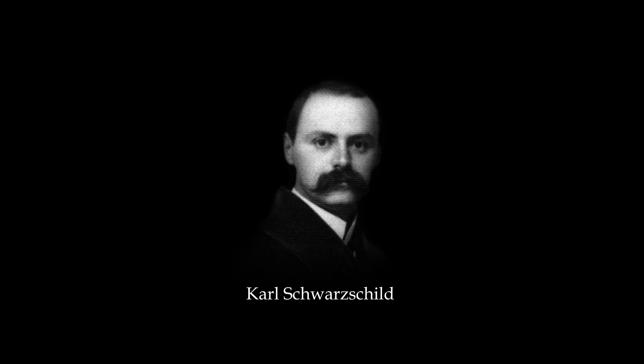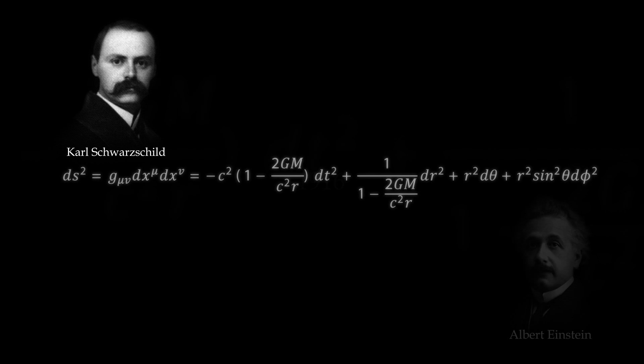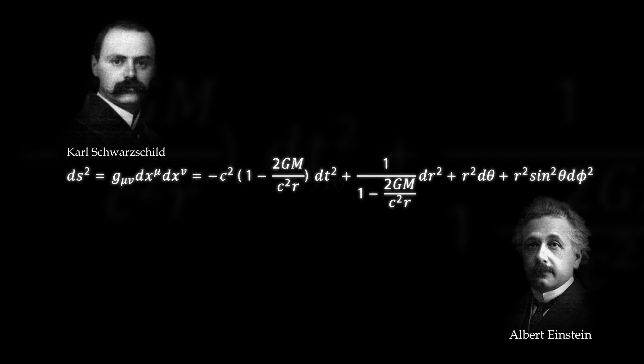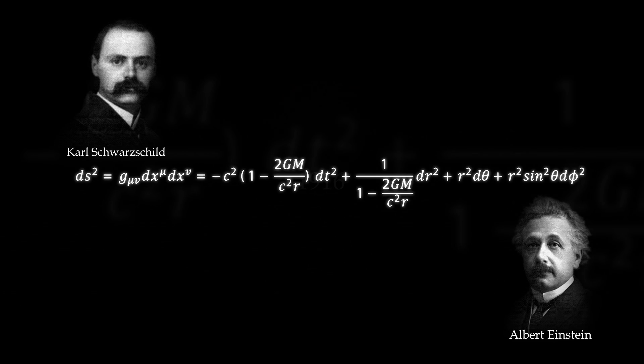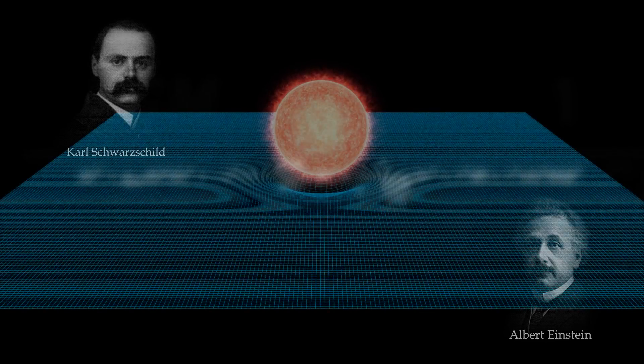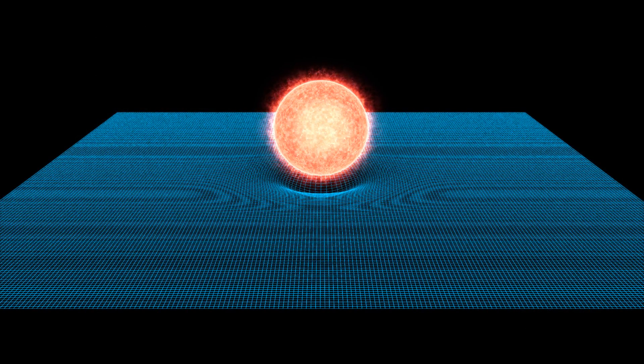But what really happens when a star collapses? As early as 1916, the German physicist Karl Schwarzschild formulated Schwarzschild's solution on the basis of Einstein's general theory of relativity. Thus, about 100 years ago, Schwarzschild's solution described what really happens when a massive star collapses.